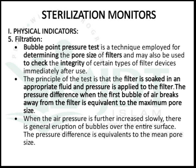Physical indicators in filtration are monitored by performing a bubble point pressure test, which determines the pore size of a filter and checks the integrity of certain filter devices after use. The filter is soaked in an appropriate fluid, and when pressure is applied the pressure difference at which the first bubble of air breaks away is equivalent to the maximum pore size. When air pressure is further increased slowly, general eruption of bubbles over the entire surface gives the pressure difference equivalent to the mean pore size.